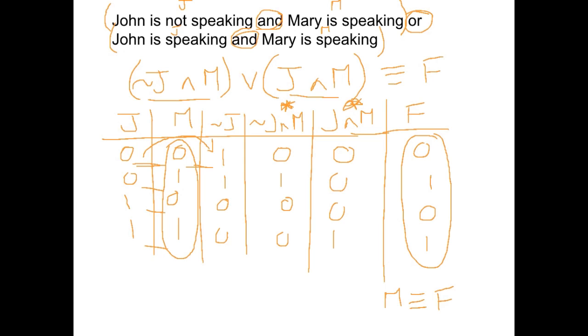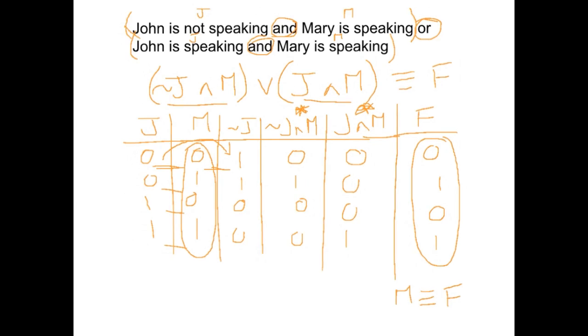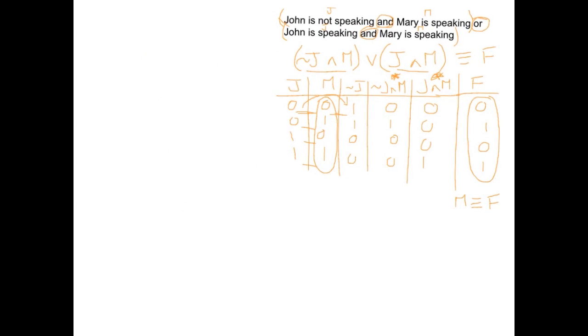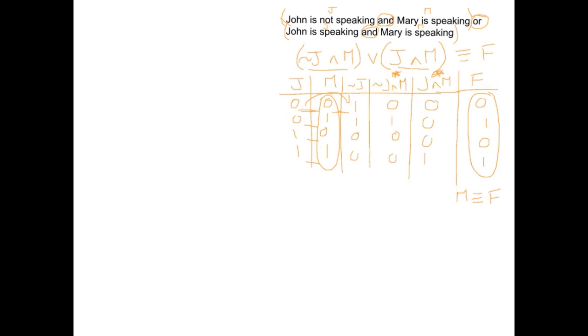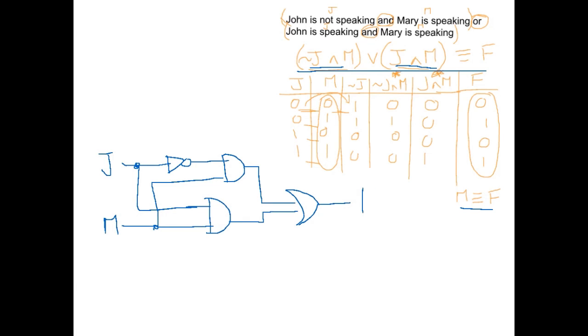Now we've also got to make this into a circuit diagram. So I'm going to make everything a bit smaller. I'm going to pop that over there. So we've got John and we've got Mary. So we're not going to use our simplified version. We're going to use our full version. So we've got, let's start with our left bracket. So we've got not J and M. Then we've also got J and M, which is that second set of brackets. And then we or our two results together to produce F. I'm going to give you just one more. And this one's going to be really easy, but it's going to introduce a new logic gate.